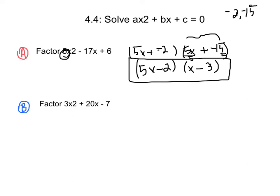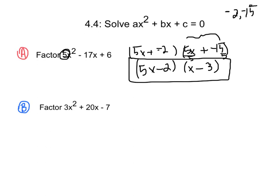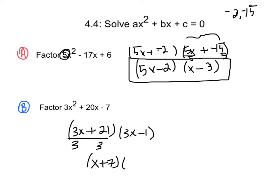We'll solve the second problem the same way. We want two numbers that when multiplied together give negative 21 and when added together give 20. Those numbers are 21 and negative 1. So we get 3x plus 21 and 3x minus 1, placing 3s in front of both x terms. Dividing 3x plus 21 by 3 gives x plus 7, so our final answer is x plus 7 times 3x minus 1. If you check either answer, you'll see it gives back the original problem.